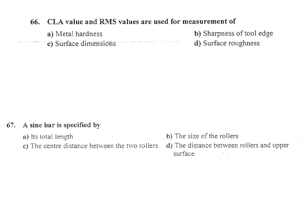CLA value and RMS values are used for measurement of surface roughness measurement. CLA is centerline average value and RMS is root mean square value. In CLA formula is RA equal to 1 by L, 0 to L, Y dx.